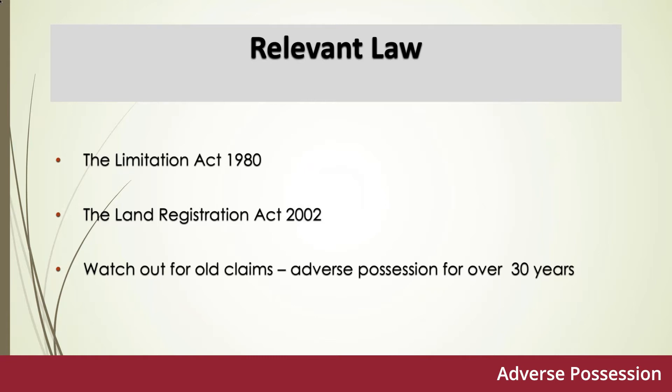There are one or two issues relating to historical adverse possession claims that we must be aware of. We do need to watch out for old adverse possession claims where adverse possession can be established for a period of over 30 years relating to unregistered land, because in those circumstances the adverse possessor will be entitled to be registered as proprietor courtesy of the 1980 Act rather than the 2002 Act.